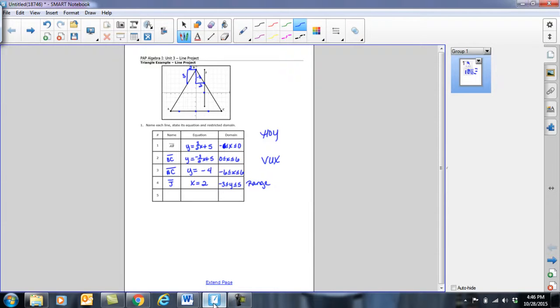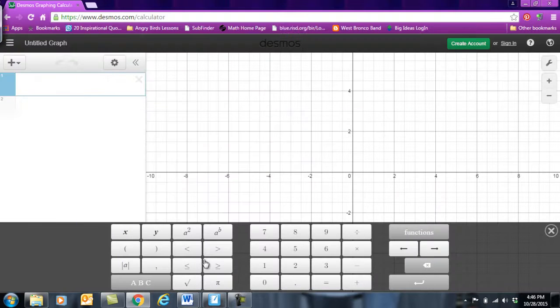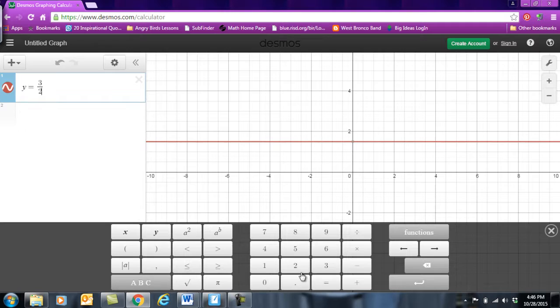But we're going to start with our first equation which was y = 3/2x + 5. So I'm going to start with y equals. And to do 3 over 2, I'm going to do 3 divided by 2 and it's automatically going to make it a fraction. But then I'm going to have to push this right arrow so that I can not be in the fraction anymore. I'm going to have x plus 5. And you see, without domain restrictions, it draws this big long line.